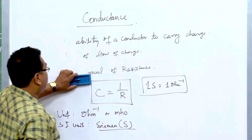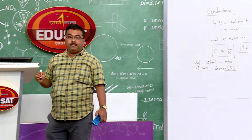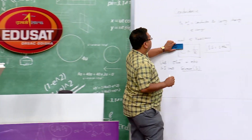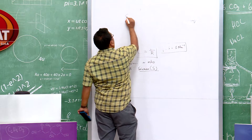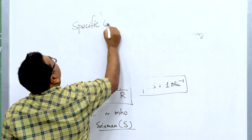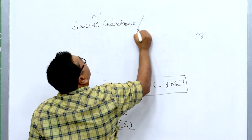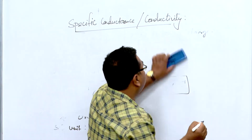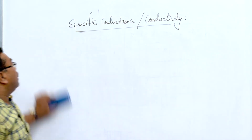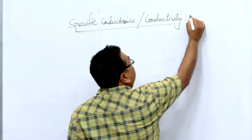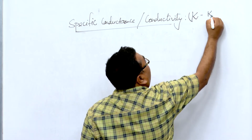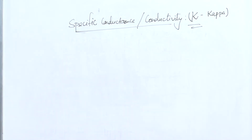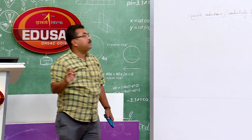The next term is specific conductance, or conductivity, designated by the Greek letter kappa (κ). Kappa stands for specific conductance or conductivity.